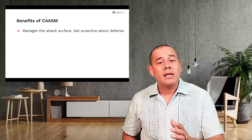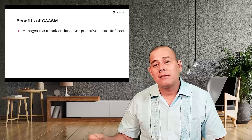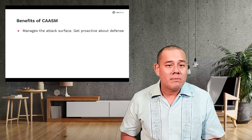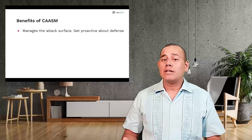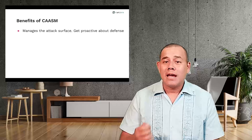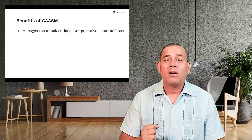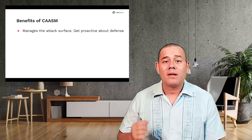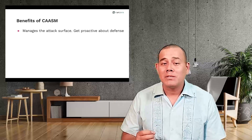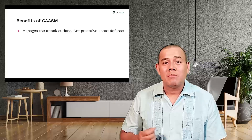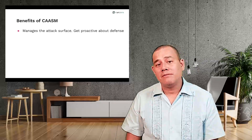Continuous monitoring and maintenance are key to the success of CHASM. By actively monitoring the attack surface, organizations can detect and respond to new risks promptly, making it harder for the attacker to find potential entry points. By doing so, an organization can become proactive about their defense.